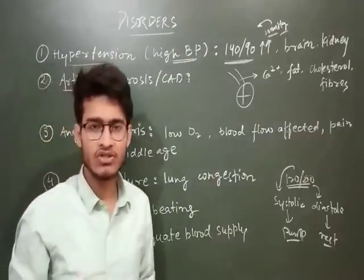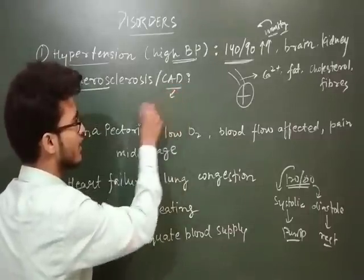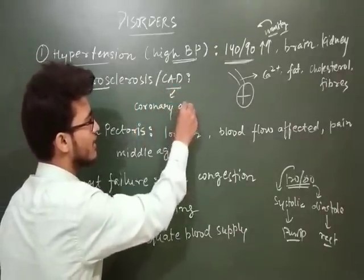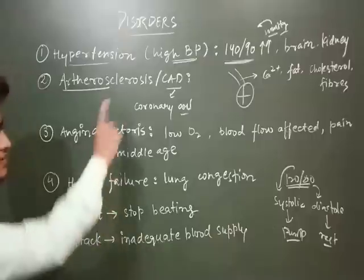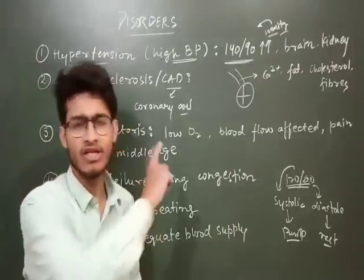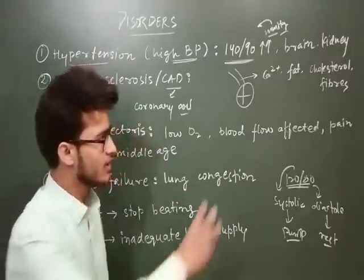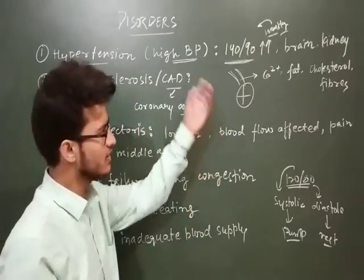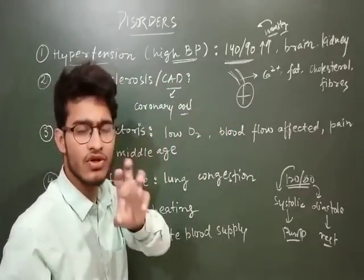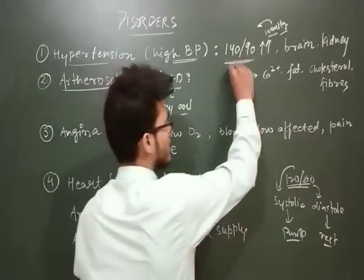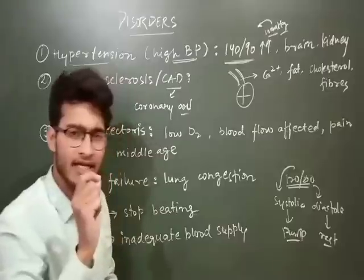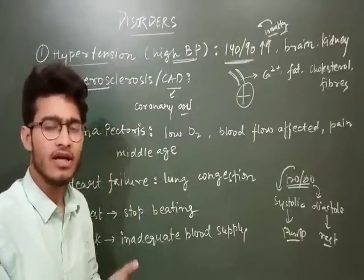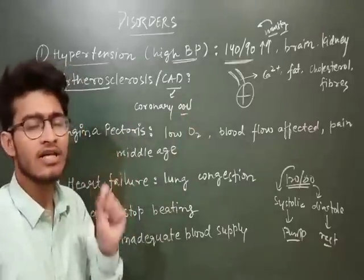Atherosclerosis, also known as CAD — that is Coronary Artery Disease. Now, think of your heart and the vessel which provides blood to your heart muscles. When this vessel is getting choked — when it is getting blocked by the deposition of different kinds of things — it is basically causing atherosclerosis. It can be blocked by different kinds of agents.